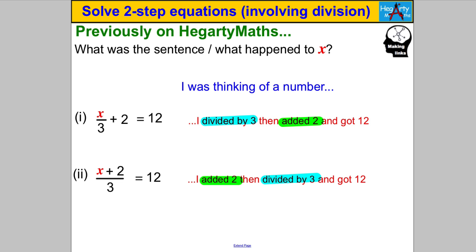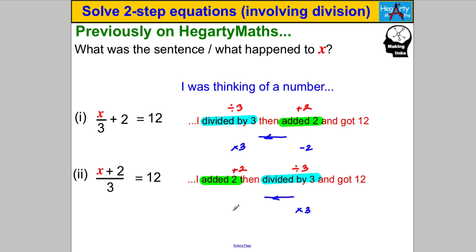It's really important when you look at equations like this that you know the order of what happened to X, so that when we're solving using the inverse process we know what to do. If you originally divided X by 3 and then added 2, you subtract 2 and then multiply by 3. But if you originally added 2 and afterwards divided by 3, you first multiply both sides by 3 and then subtract 2.